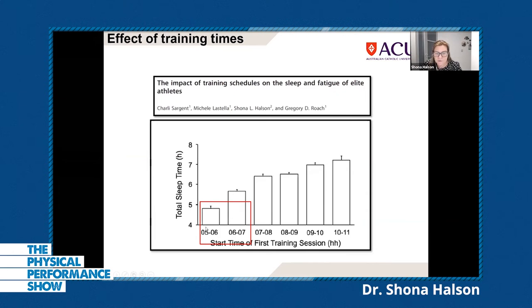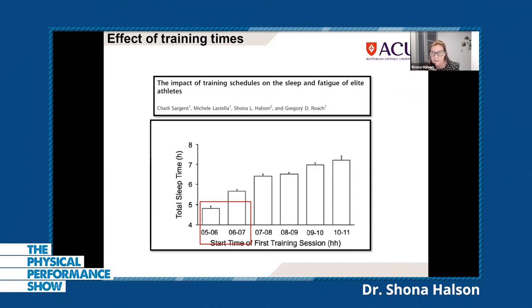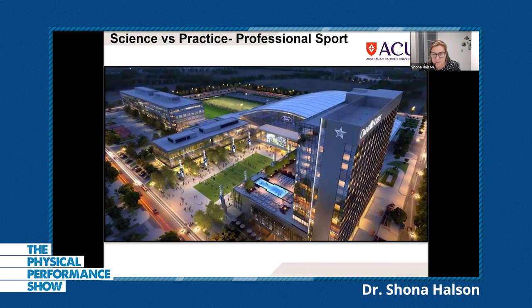Looking at data across a range of athletes, when training starts between 5 and 6am, athletes are getting less than five hours of sleep. The important thing isn't just the training start time — it's the time the athlete has to wake up, factoring in travel, eating, and preparation before training. With these very early training times, it's hard to get sufficient duration, especially if you're also training in the evening, studying, or working. That combination can become a real problem.